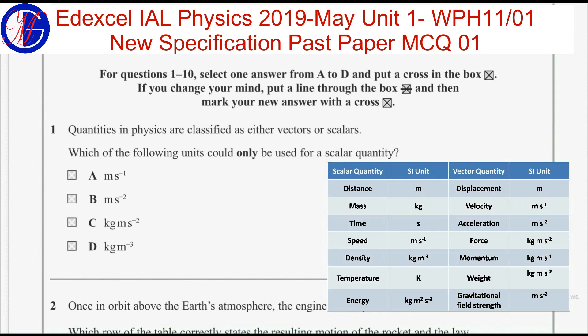Now study the following table. According to the table, you can observe that answer A is wrong because meters per second is also used to denote a scalar quantity, speed, and also a vector quantity, velocity. Meters per second squared, answer B, is the unit of acceleration, which is a vector quantity. Answer C, kilograms meters per second squared, is the unit of force or weight, which is also a vector quantity.